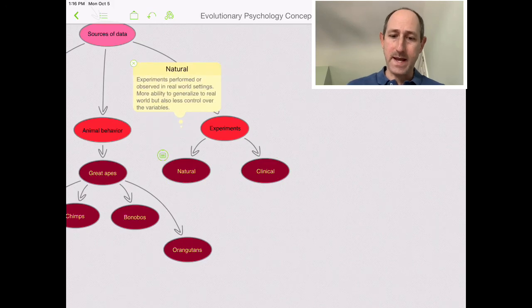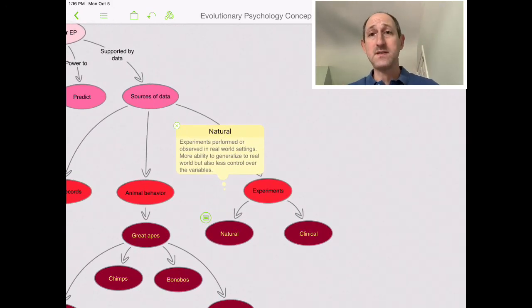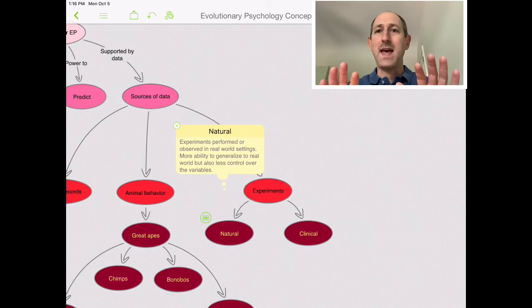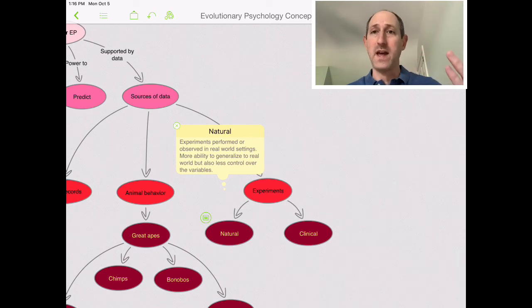So the second way we might gather data is through what are called natural experiments. These could be manipulated by scientists, but in real world settings, so the context is more natural. Or there's some sort of natural lucky happenstance where two towns, both near each other, both demographically similar, enact different policies. And then we can see, well, one enacted this policy and had this effect and we can kind of make some inferences. Now, the good thing about that is it's more natural. It may allow us to generalize more, but we have a lot less control of the variables because there could be lots of different explanations for what we're seeing.